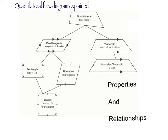One of the properties that we see is parallel, which is signified by these arrows. The arrows here and the arrows here, being the same, indicate that this line and this line are parallel. Likewise, this line and this line are parallel. So a parallelogram has two sets of parallel sides.